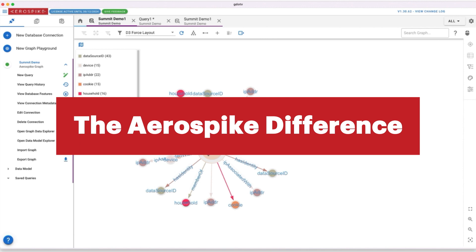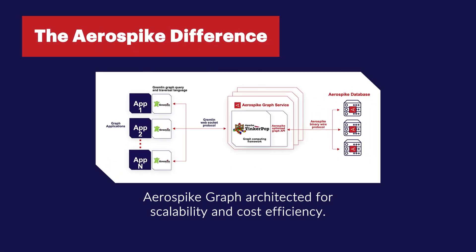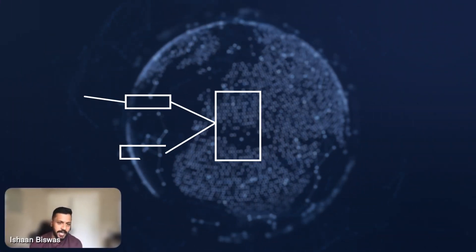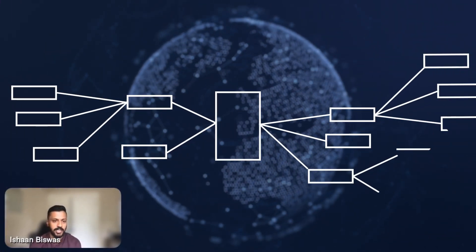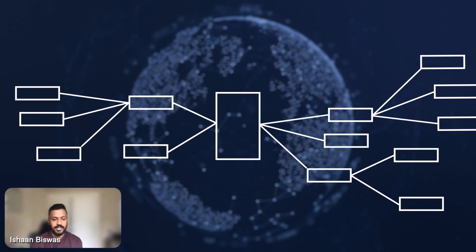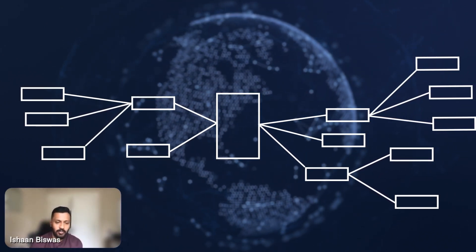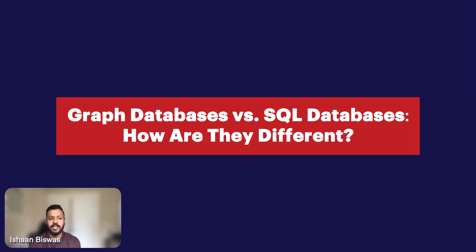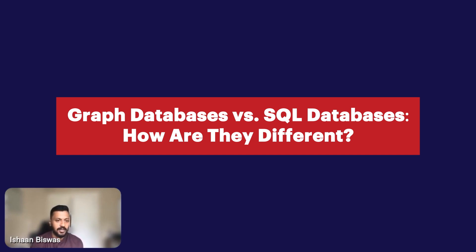You can basically do your create, read, update, and delete operations using a graph API. The world is largely used to SQL and thinking about the world in tables. So how do you think about the world differently when you look at a graph database compared to SQL, and what should architects and developers think about when looking at the graph data model?